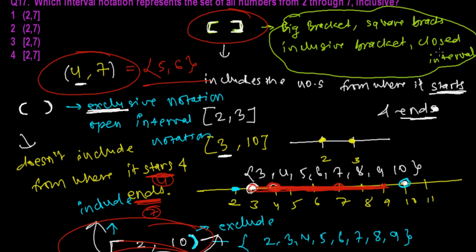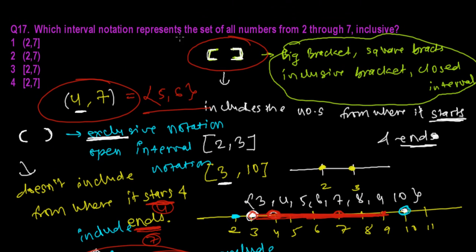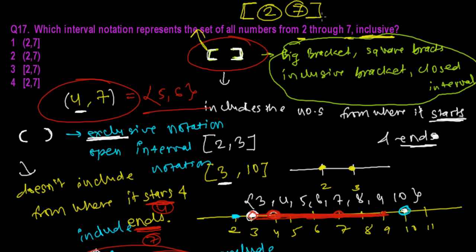Now let's look at our question: which interval notation represents all numbers from two to seven, inclusive? Since it's fully inclusive, we include both two and seven. The bracket that represents include is the closed square bracket. So we need closed brackets on both sides. Looking at the answer choices, the first option is half-exclusive half-inclusive, the second is completely exclusive, the third is inclusive-exclusive, and the fourth — fully inclusive on both sides — is our answer. I hope this helps, and please don't forget to subscribe to the channel.